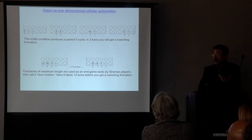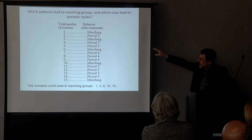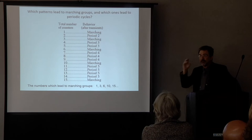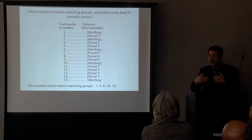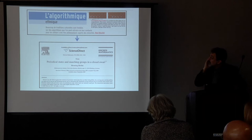You can treat it as a one-dimensional cellular automaton and ask: what are the basins of attraction? The marching formations occur when you have a total number of counters of 1, 3, 6, 10, 15 — the triangle number sequence. That same triangle number sequence occurs in other African games, not because they're obsessed with triangle numbers, but because that's a signature of self-organizing systems. That's the commonality between all these different cultures — they're using self-organizing principles as both a spiritual basis and a design principle.